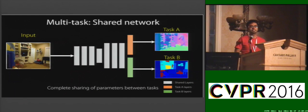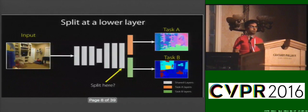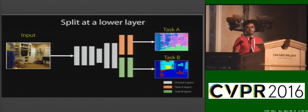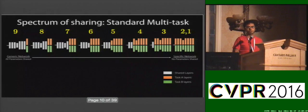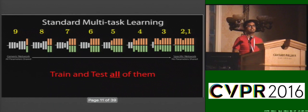A standard way to do this is to use multi-task learning. In this case, we have a completely shared network which predicts two outputs. But how do we know that a single representation will help both the tasks? We can split at a lower layer and get more task-specific representations. In fact, by continuing to do so, we can get an entire spectrum of architectures by splitting at various layers. And this is the standard way to do multi-task learning where we train and test all of these architectures.